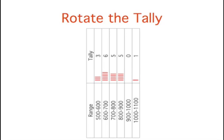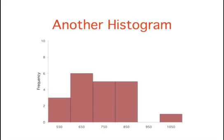Then, if you rotate this table on its side, you can see a figure that is beginning to look like a histogram. Finally, if you replace the tally marks with thick bars, you have a completed histogram.